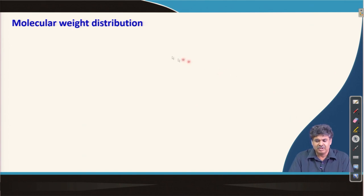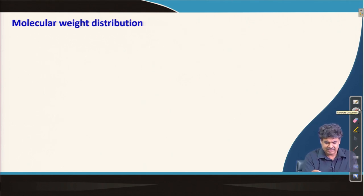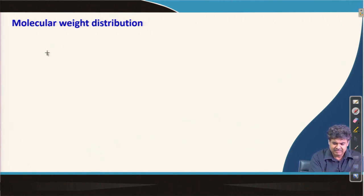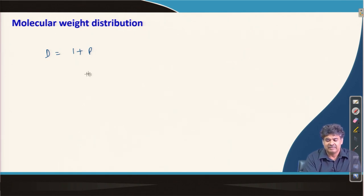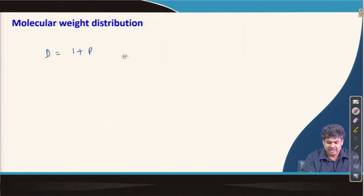We will move to the next topic of molecular weight distribution. I want to quickly bring up dispersity from step growth polymerization: we have seen dispersity equals 1 plus p, where p was the conversion of functional groups — the fraction of functional groups which reacted or were consumed during the reaction.